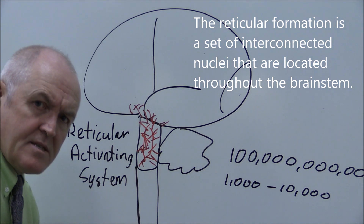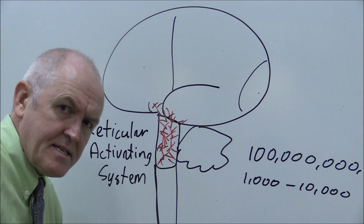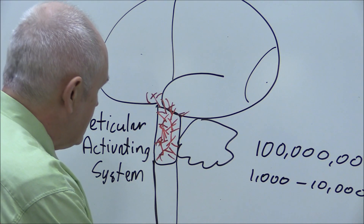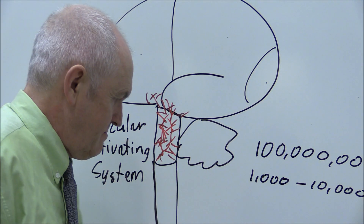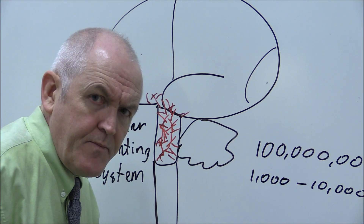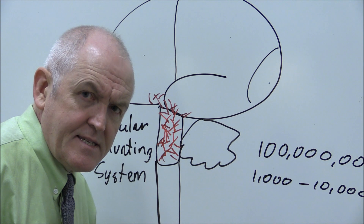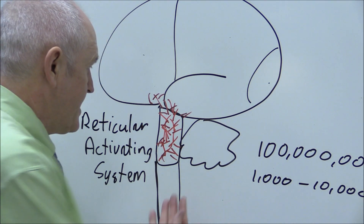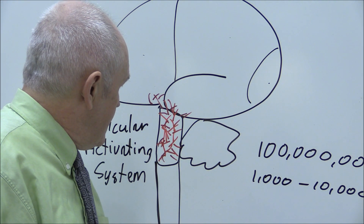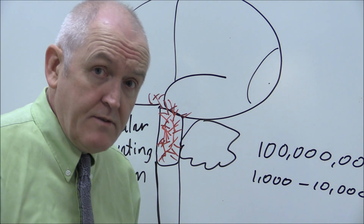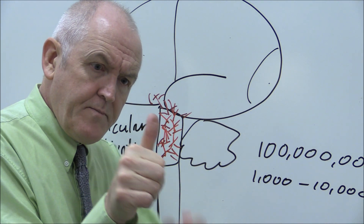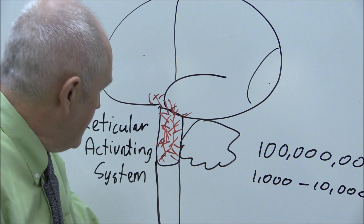Reticular means a net — a reticulum is a net, from Latin. So we have this large, complicated network of fine interconnected neurons, largely in the brainstem and to a small degree in the bottom of the cerebrum. They are very small nerve fibers, very finely interconnected, and yet the area they're in is not a lot bigger than your thumb — the brainstem is a relatively small mass of tissue.